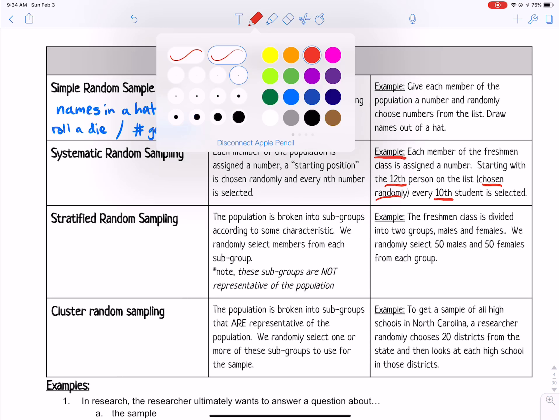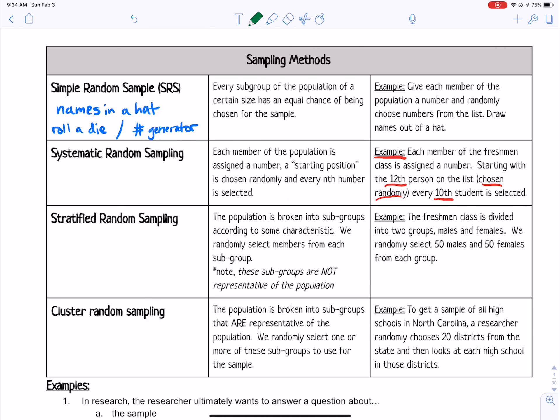A stratified random sample is when you break up your population into subgroups according to some characteristic. And you select members from each subgroup. So the example given is that the freshman class is divided into two groups. So we have males and we have females, our two groups that have a characteristic.